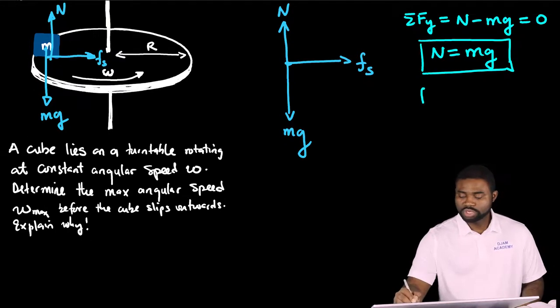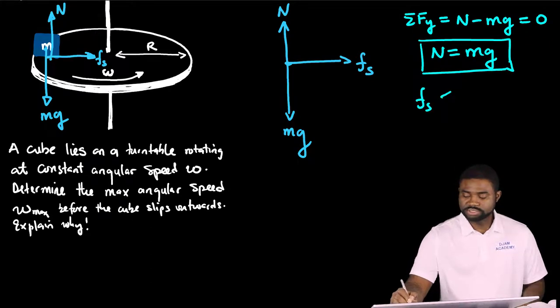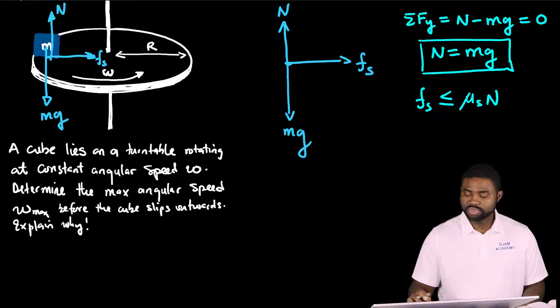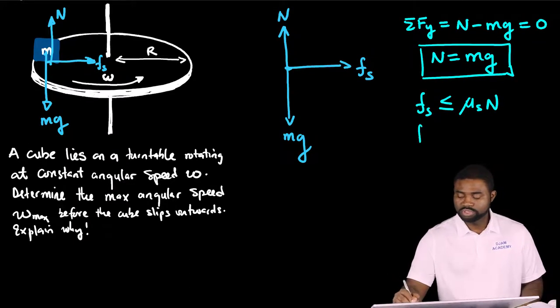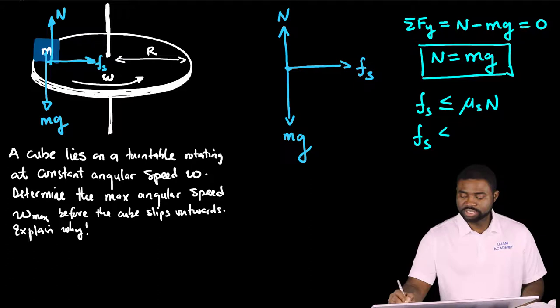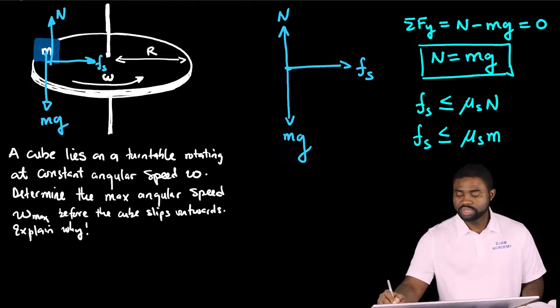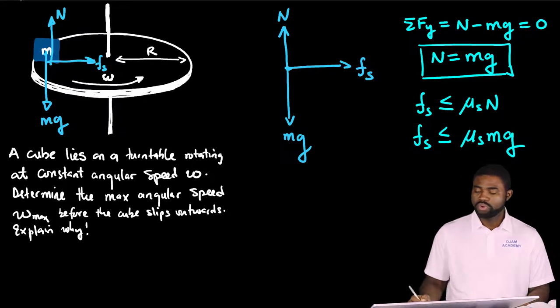we know that f sub s is less than or equal to mu s n. In other words, f sub s is less than or equal to mu s mg. Now,